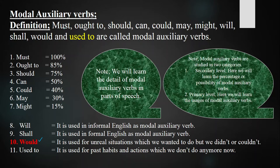Before starting the lecture, let's have a quick definition of modal auxiliary verbs. Must, ought to, should, can, could, may, might, will, shall, would, and 'used to' are called modal auxiliary verbs. Keep in mind that 'used to' is written in yellow because some grammarians say it is a structure while others say it is a modal auxiliary verb.